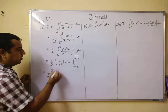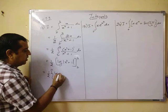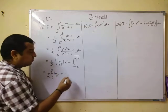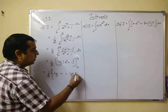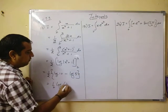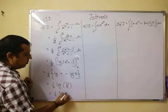This is 1 by 2 common. Apply the upper limit which is 3. You get log of 3 square is 9, 9 plus 1 is 10 minus. Apply the lower limit 2. 2 square is 4, 4 plus 1 is 5. And finally you can write this as 1 by 2 log of 10 by 5. That gives you 1 by 2 log 2.